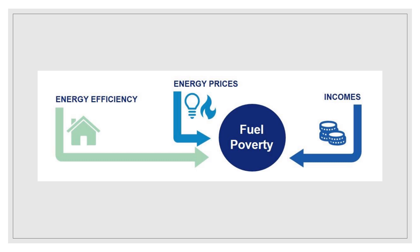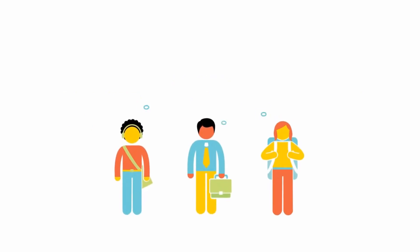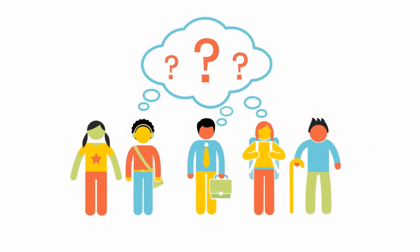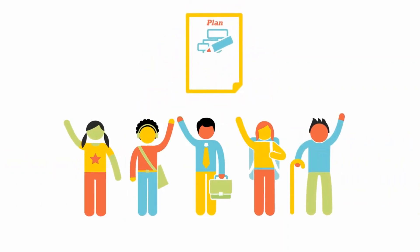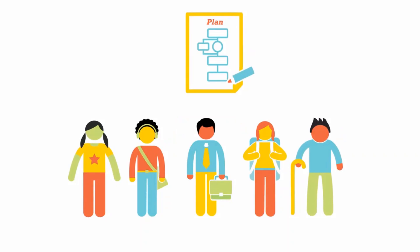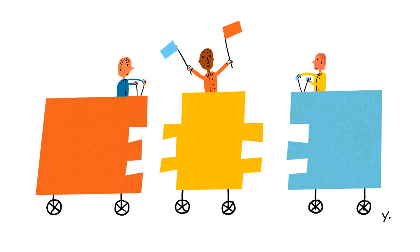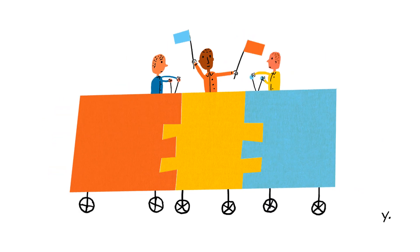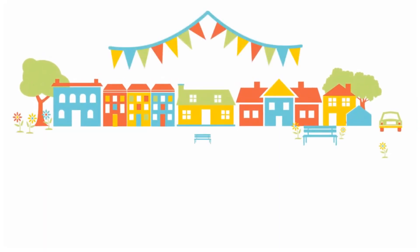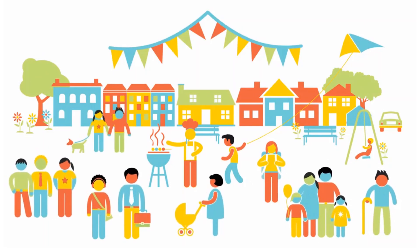Fuel poverty is also more prevalent in rural areas, as investment often focuses on more densely populated urban areas and because rural homes are typically more energy inefficient and therefore more expensive to run. Community energy also has many social benefits. It brings people together towards a collective aim, strengthening social cohesion and putting local knowledge to use. It can also protect the community from rising fuel costs, improve energy security and create an income which can be put towards further strengthening the community.